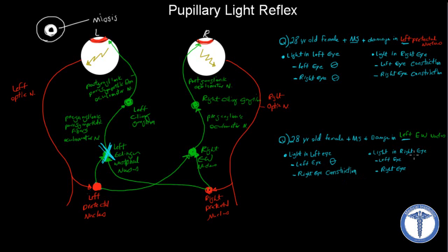What about if we shine the light in the right eye? The signals are going to travel through the right optic nerve and go to the right pre-tectal nucleus. Again, we have two pathways. One pathway goes from the right pre-tectal nucleus to the right Edinger-Westphal nucleus, which is normal, and all the way through to the right sphincter muscle of the eye, causing constriction — so the right eye constricts. The second signal crosses over to the left Edinger-Westphal nucleus, but since it's damaged, no signals will be sent beyond this point, so the left eye remains unchanged — no change in the left eye.